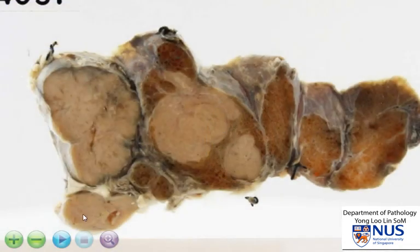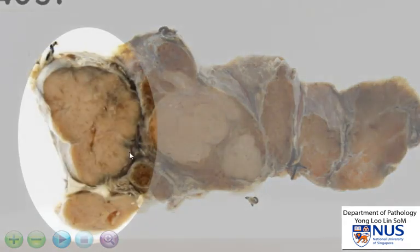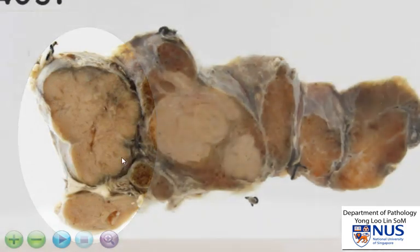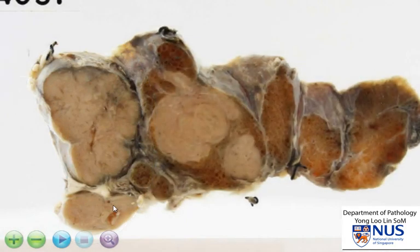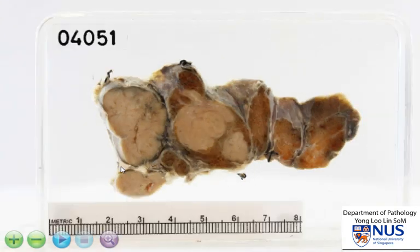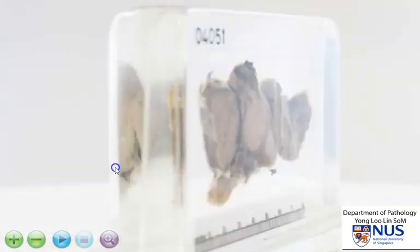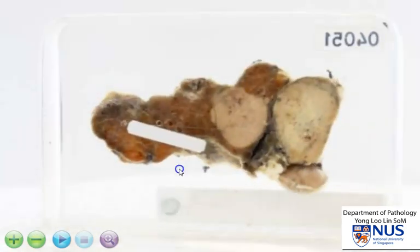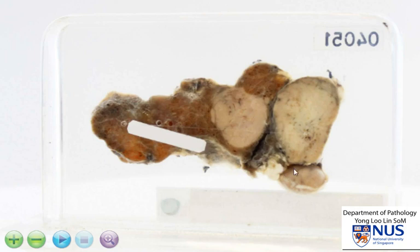In addition, we also see some masses here and here. It is difficult to say for sure whether these are actually part of the thyroid parenchyma, or whether, for example, they are lymph nodes, but what is clear is that they are also involved by the same neoplastic process that we see in the thyroid gland.